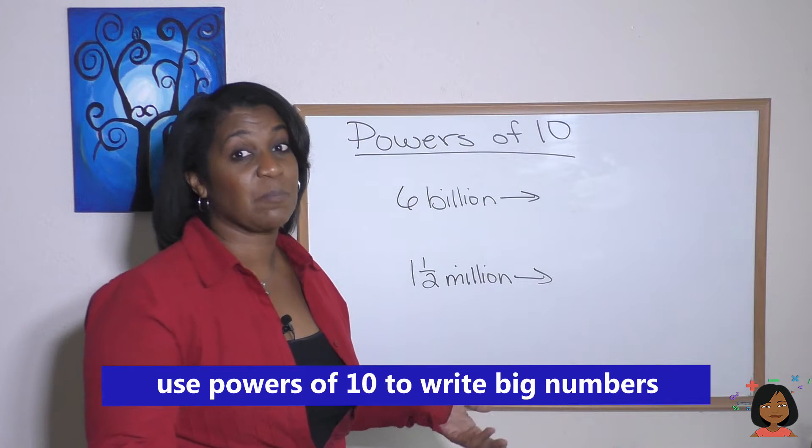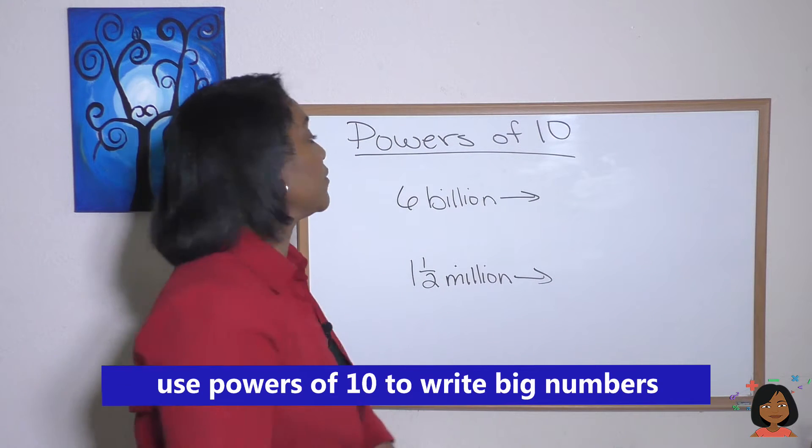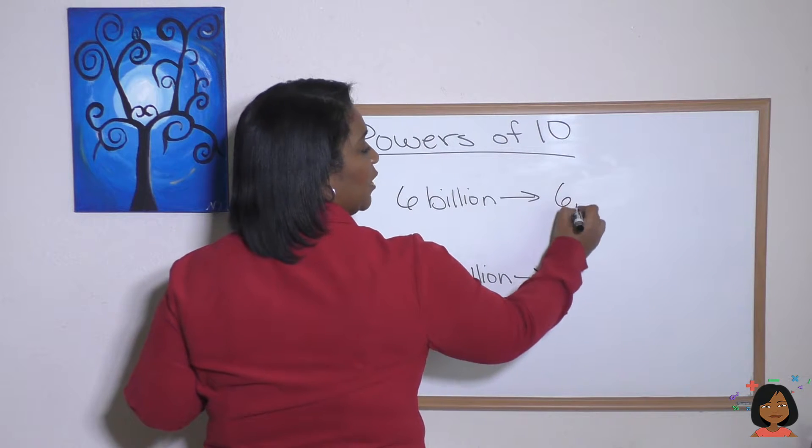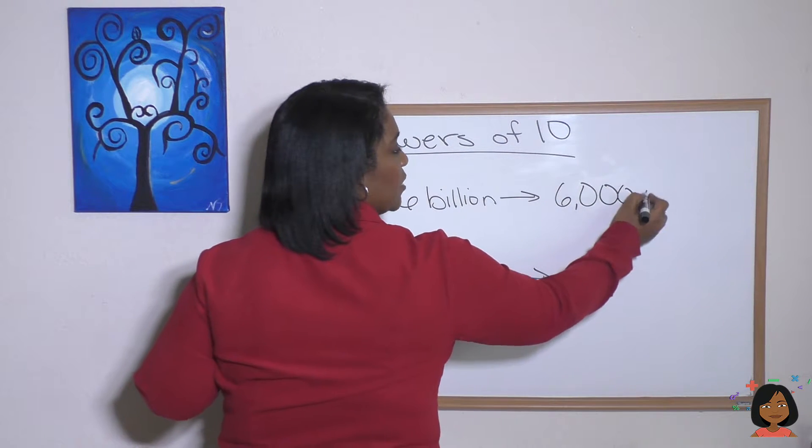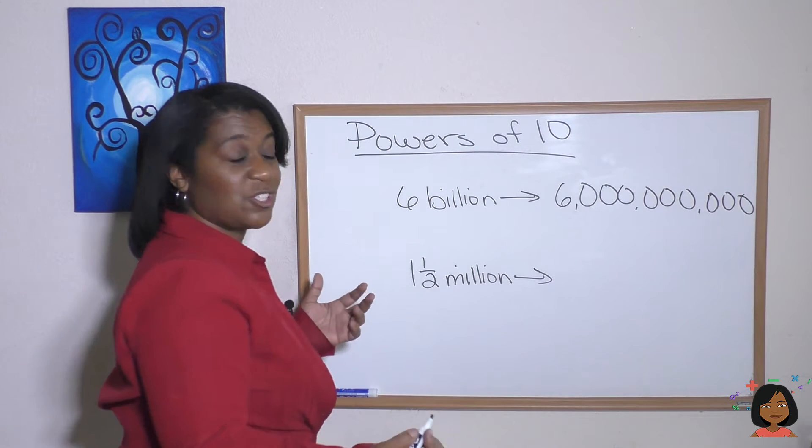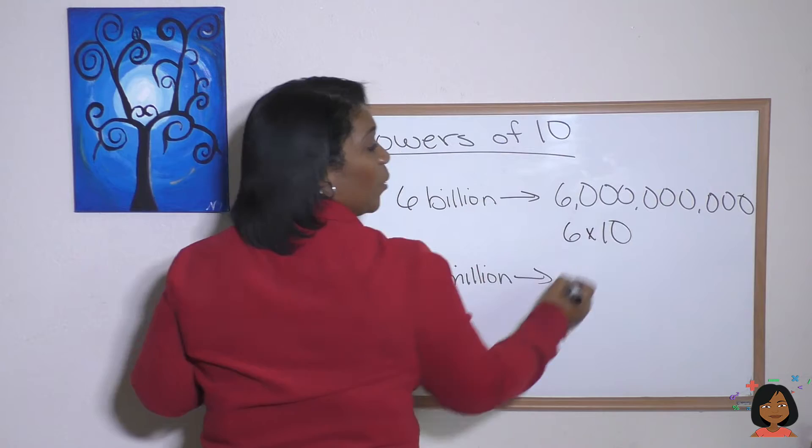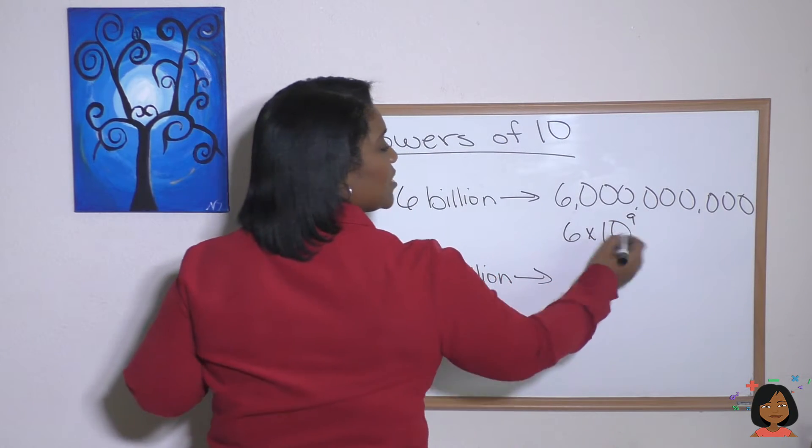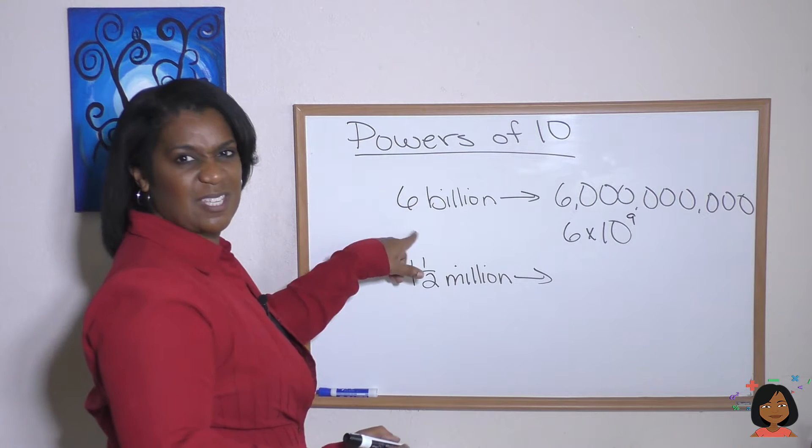It's also helpful in writing really big numbers, a lot shorter. Here we go. We've got 6 billion here. So normally we'd write 6 billion, we'd write a whole bunch of zeros, 9 to be exact. Or we could choose to just write 6 times, well, how many zeros did we say we had? We had 9 zeros. So 10 to the 9th is the same thing as saying 6 billion.